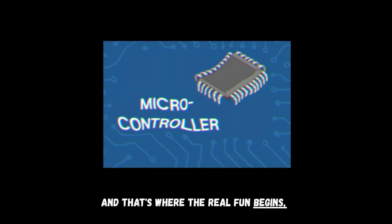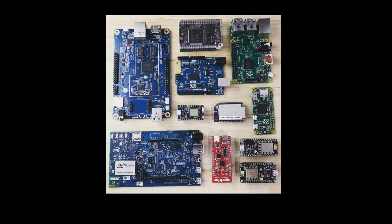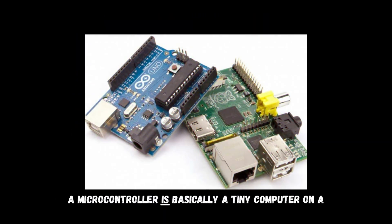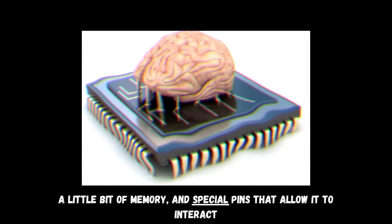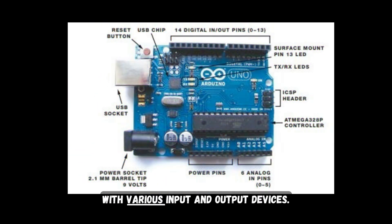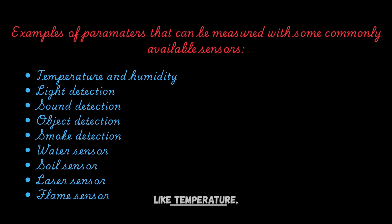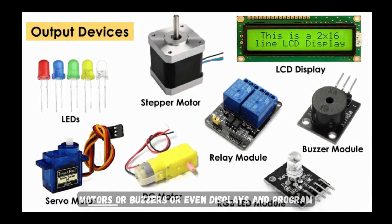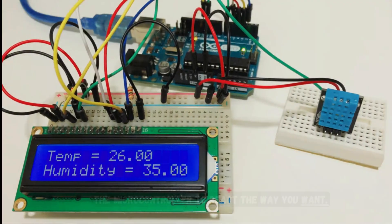That's where the real fun begins, because microcontrollers are what we'll use to actually build our projects. A microcontroller is basically a tiny computer on a single chip. Inside it there's a brain — the processor — a little bit of memory, and special pins that allow it to interact with various input and output devices. For example, you can connect sensors to it to measure parameters like temperature, motion, or light, and then connect outputs like LEDs, motors, buzzers, or even displays, and program the microcontroller to react the way you want.